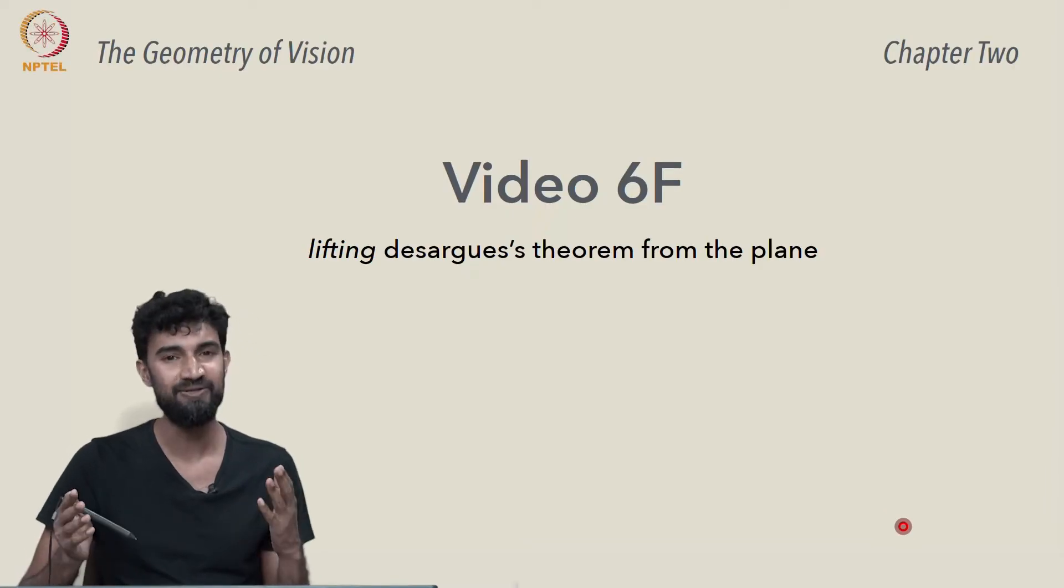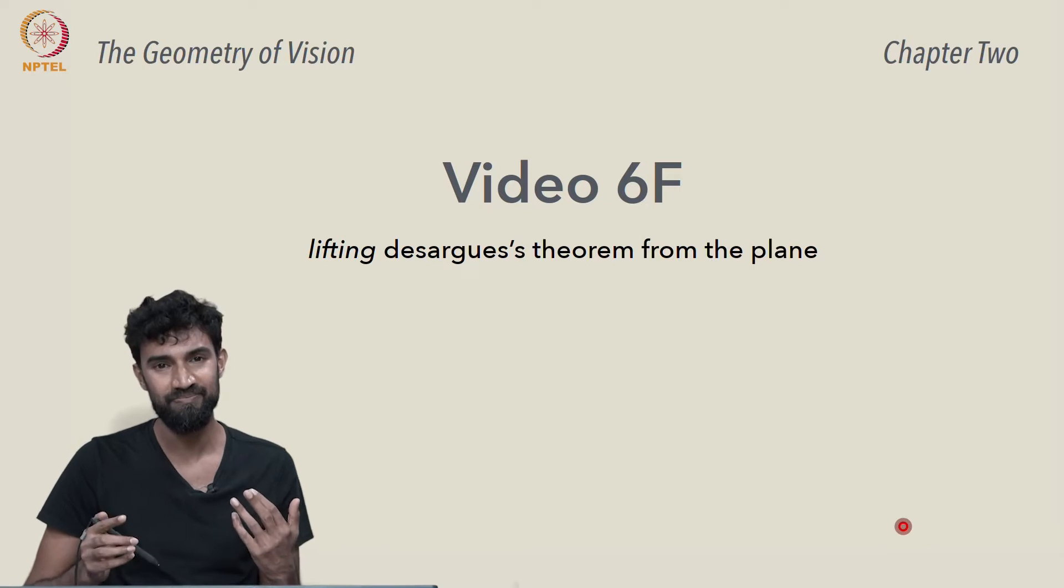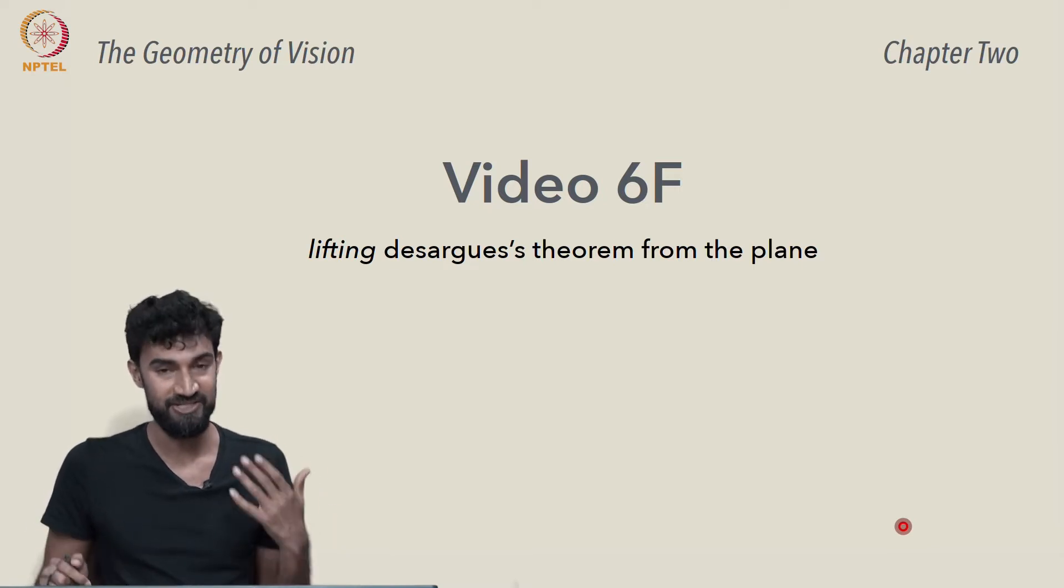Okay, but what if the two triangles are coplanar? How do we prove that Desargues' theorem still holds?